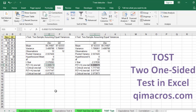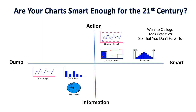So that's how you do a two one-sided test in Excel using the QI Macros. Are you still using line, bar, and pie charts from the last century? You might want to consider control charts, Pareto charts, and histograms — smart charts for the 21st century.